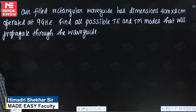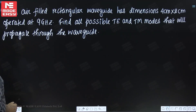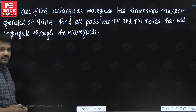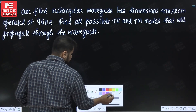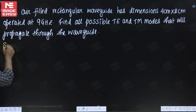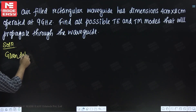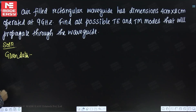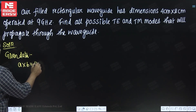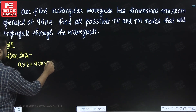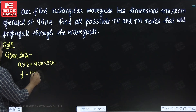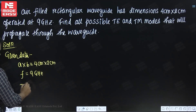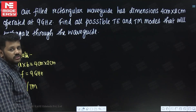Welcome everyone. We will start with the next question from the waveguides. The question is: an air-filled rectangular waveguide has dimensions 4 centimeter by 2 centimeter, operated at 9 gigahertz. Find all possible TE and TM modes that will propagate through the waveguide.